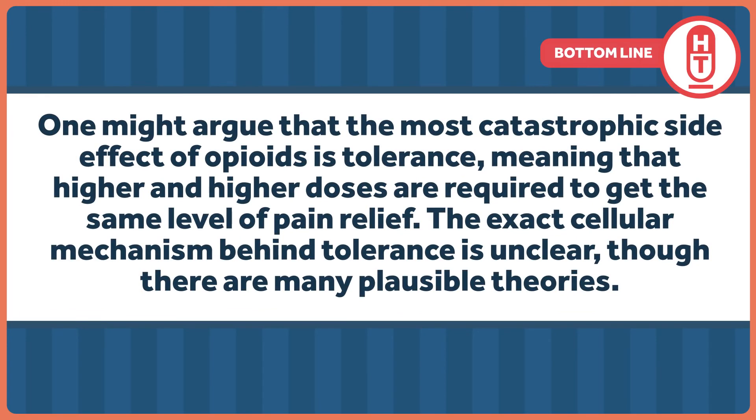Other unpleasant side effects of opioid drugs are sedation, urinary retention, nausea, vomiting, dizziness, and really bad constipation. One might argue that the most catastrophic side effect of opioids is tolerance, meaning that higher and higher doses are required to get the same level of pain relief. The exact cellular mechanism behind tolerance is unclear, though there are many plausible theories. Opioid tolerance is the harbinger of physical dependence and addiction — and that's the topic of next week's Healthcare Triage.